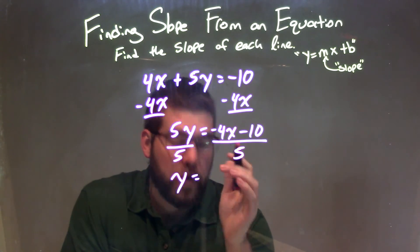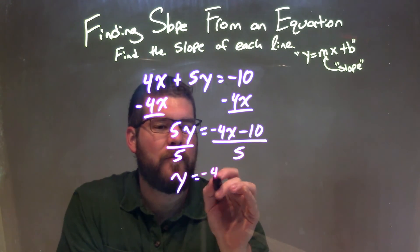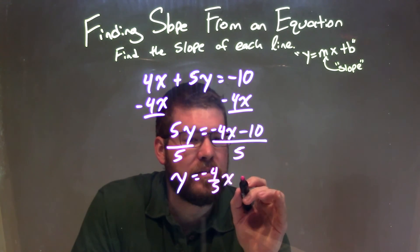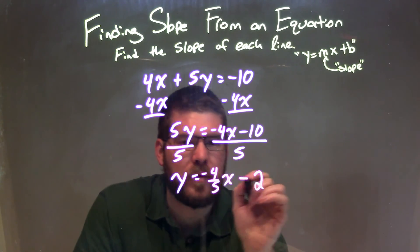Well, negative 4x divided by 5 is negative 4 fifths. So negative 4 fifths x, and negative 10 divided by 5, which is 2.